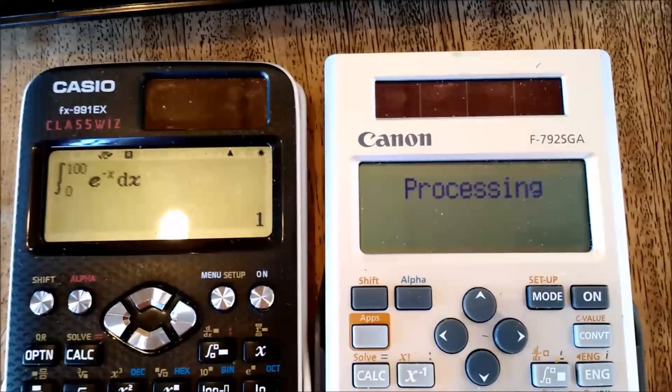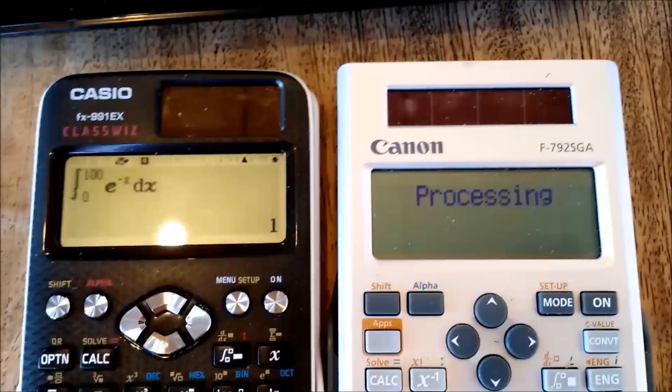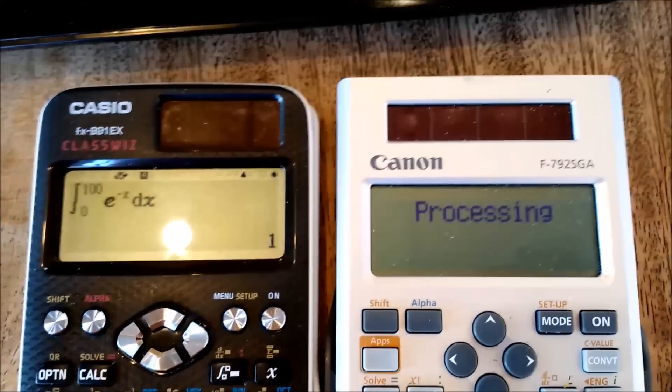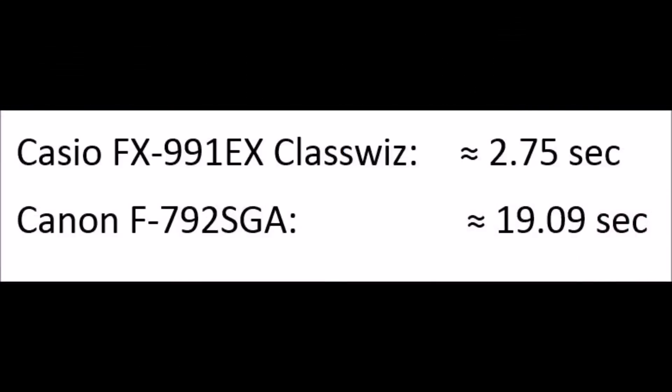The Canon is still processing and it should give me the answer in just a little bit. Yes, the answer is about 1. So the Classwiz took about 2.75 seconds and the Canon took about 19.09 seconds.